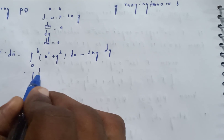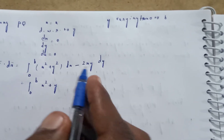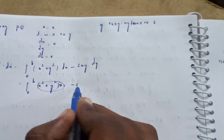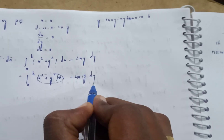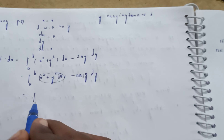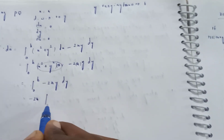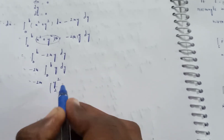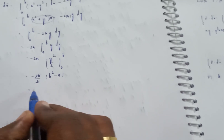Along PQ, the integral reduces to ∫₀ᵇ -2a·y·dy = -2a·[y²/2]₀ᵇ = -2a/2·(b²-0) = -ab².